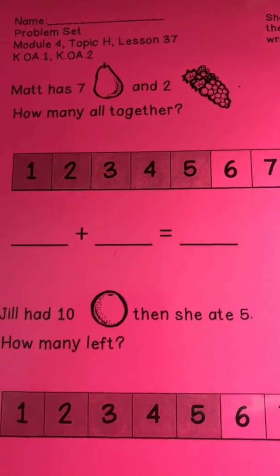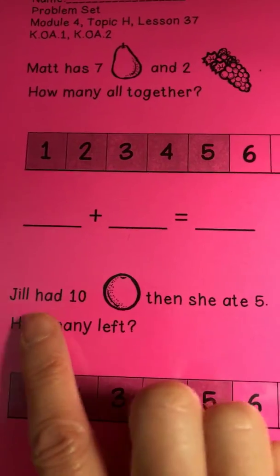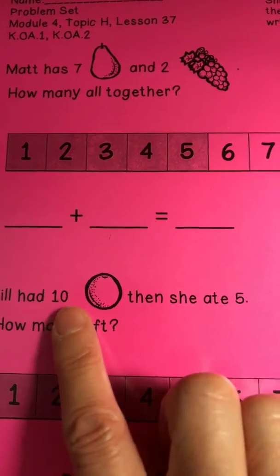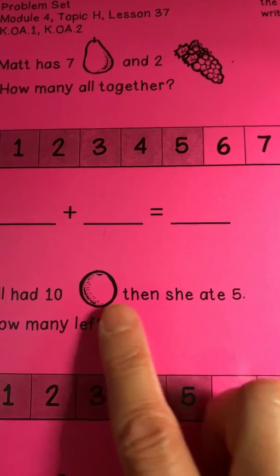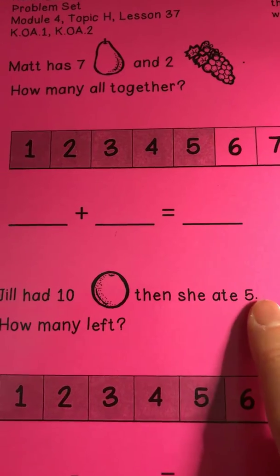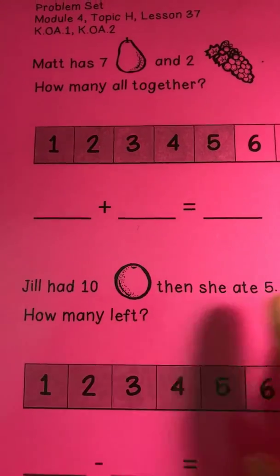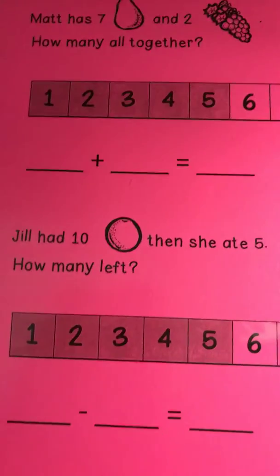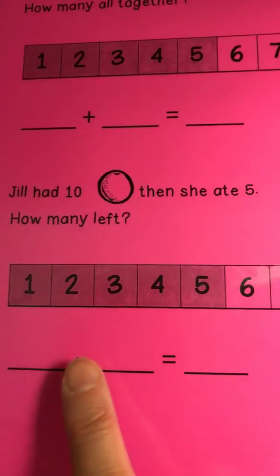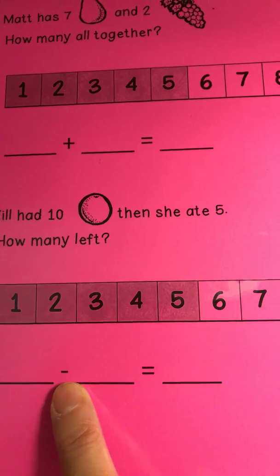Last, Jill had ten oranges then she ate five. How many left? Act out that story on your number path and then do the subtraction sentence.